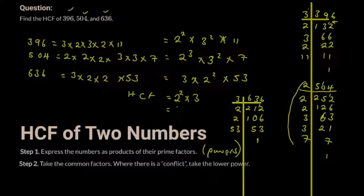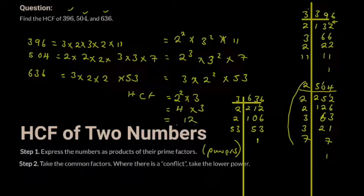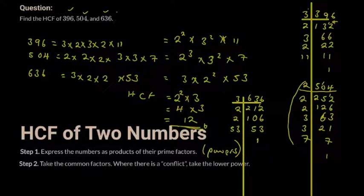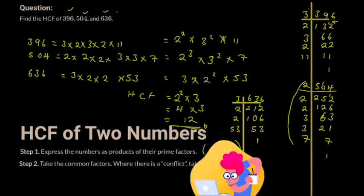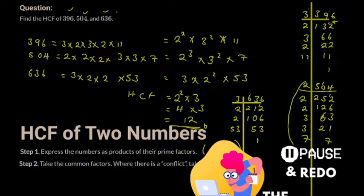Two squared is 4, multiplied by 3 gives 12. So the highest common factor of these three numbers is 12.